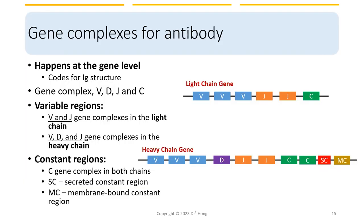Before we look at the specific mechanisms, we need to be aware that antibody diversity is generated at the gene level, and there are multiple gene complexes in the DNA that code for different parts of the antibody. These gene complexes are designated with letters V, D, J, and C. The light chain variable region contains V and J gene complexes, and the heavy chain variable region contains V, D, and J gene complexes. Both chains have the C complex that codes for the constant regions, and there are two additional complexes in the heavy chain that code for the constant region of either secreted or membrane-bound antibodies.